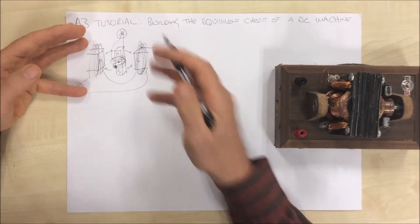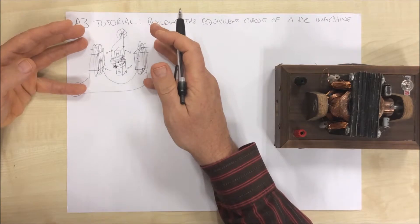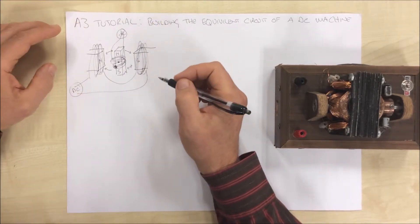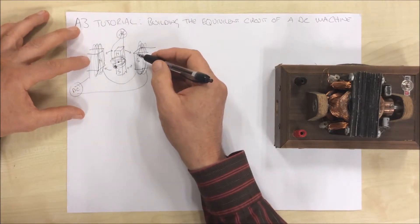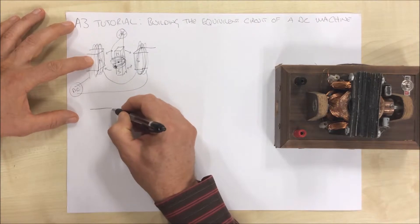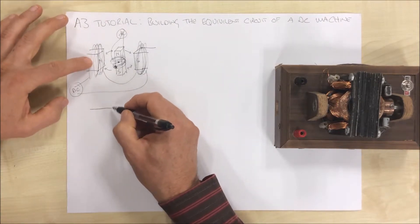To take this or this and move that into an equivalent circuit, what we can see is we basically have coils. So if we take our field, for example, we've got a wire coming in. We've got a large coil of wire.